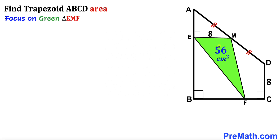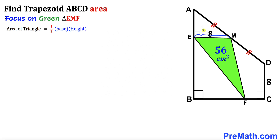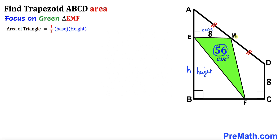Triangle EMF has an area of 56 centimeter square and one side length of 8 centimeters. Let's recall the area of a triangle formula: area equals one half times base times height. We'll assume side EM is the base and EB is the height, labeling the height as lowercase h. So: 56 equals one half times 8 times h.